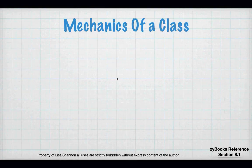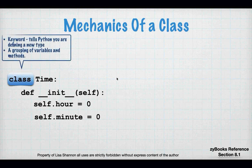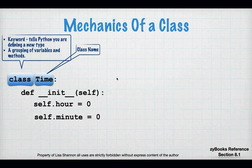So let's talk about the mechanics of a class. There will be some new keywords. `class` is a new keyword, and it tells Python that I'm defining a new type. The name that comes after this will be the name of a type in Python, and I'm going to group variables and methods together. In this case, the name I'm giving my class is `time`.